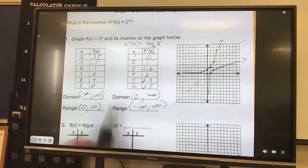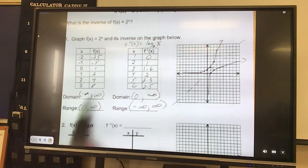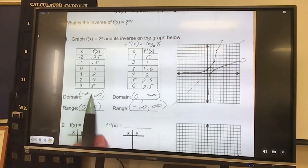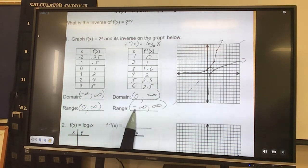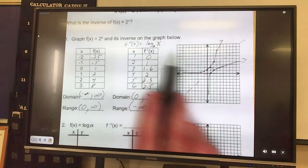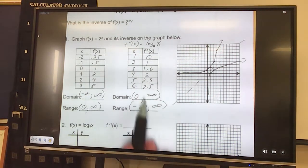Now what we noticed is when I did the inverse, look at my domain and range. They flip places. So the domain for this is actually the range for that one. The range for that one is the domain for that one. Just kind of like these flip because they're inverses, these flip as well because they're inverses.